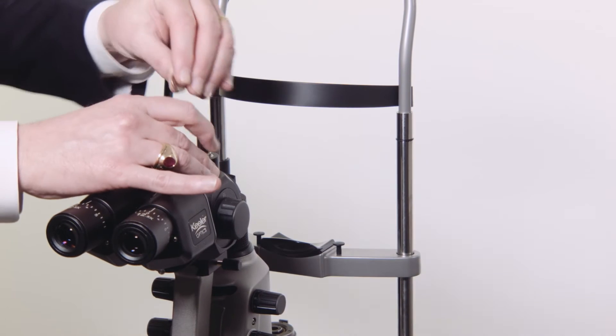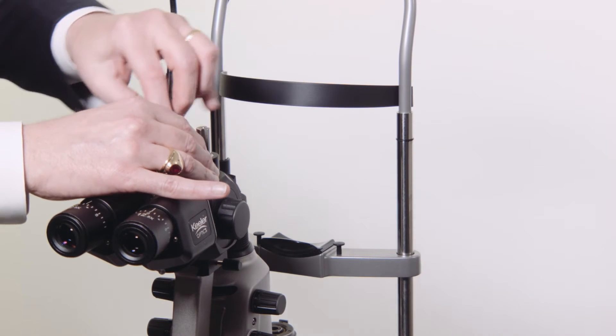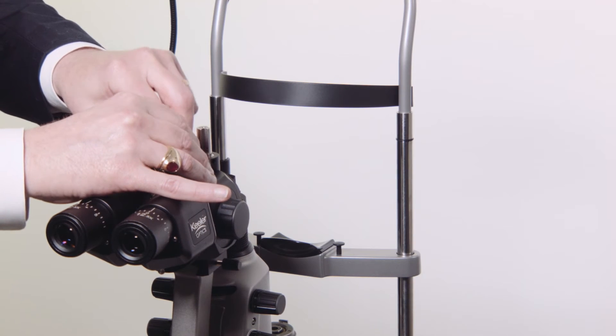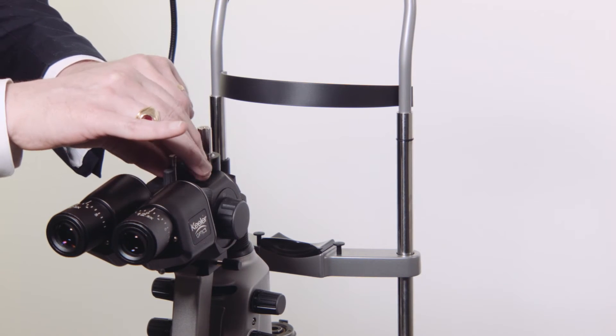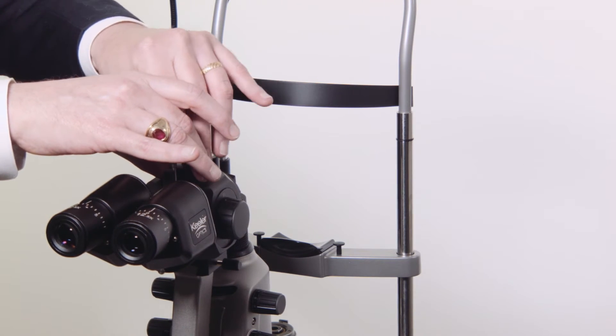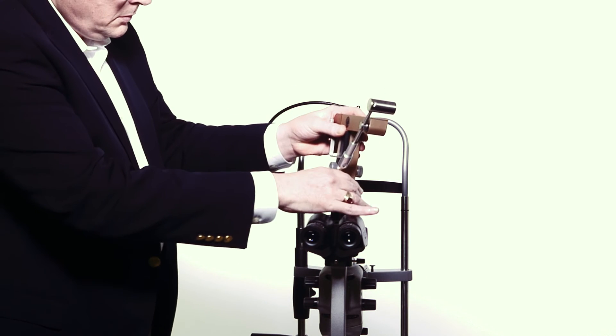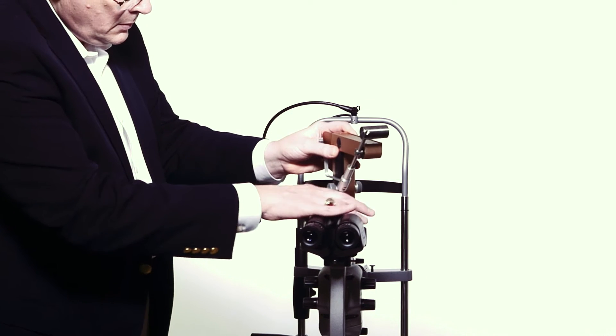To install the Z-type tonometer, which is specifically designed for ZEISS-style slit lamps, mount the plate onto the microscope body using the securing screws. Mount the tonometer onto the mounting post.